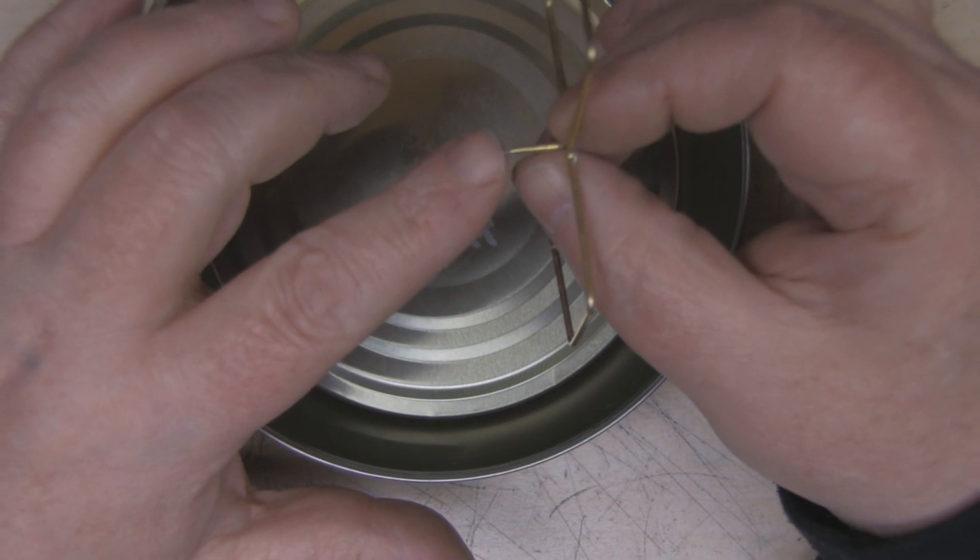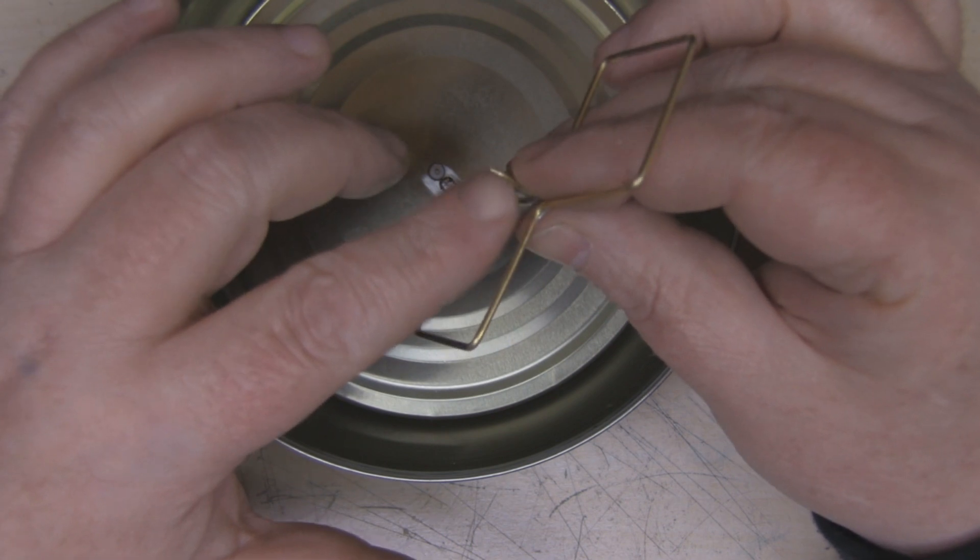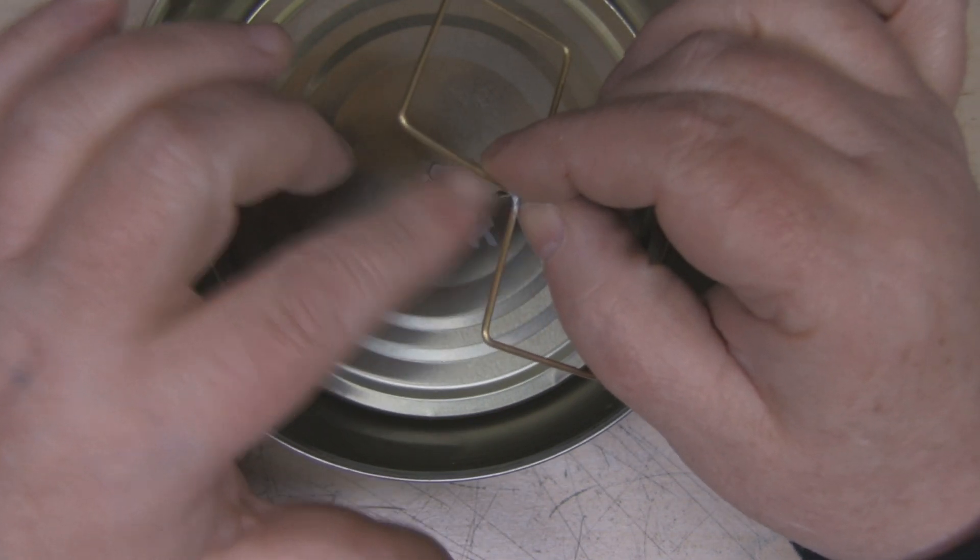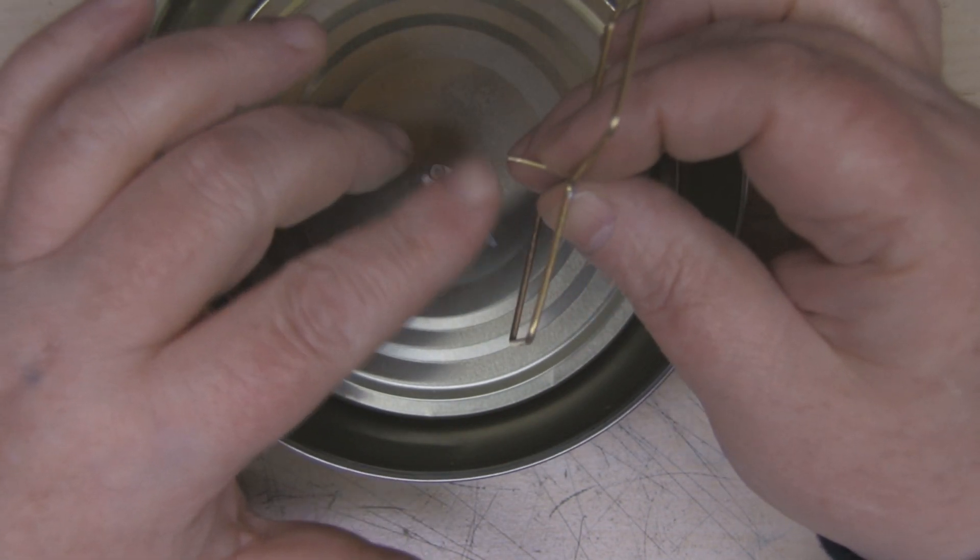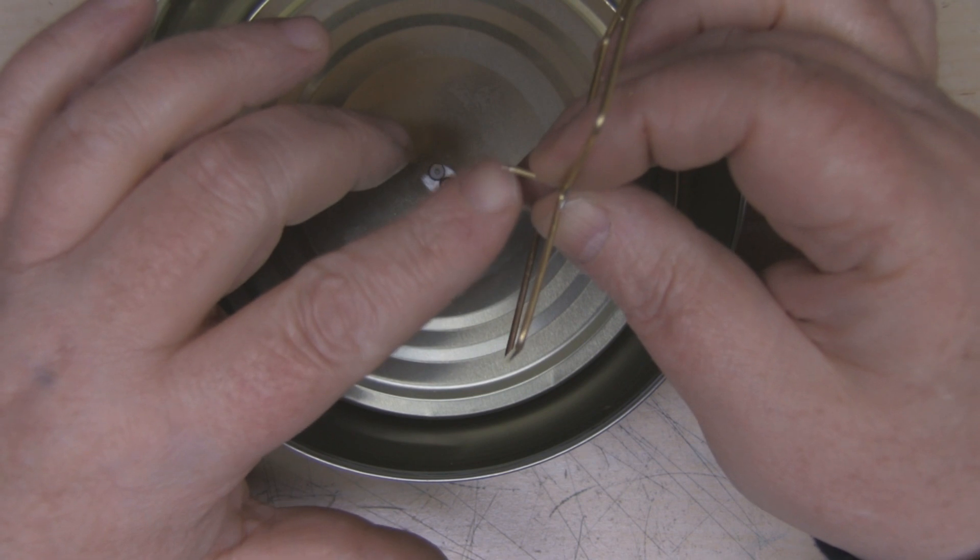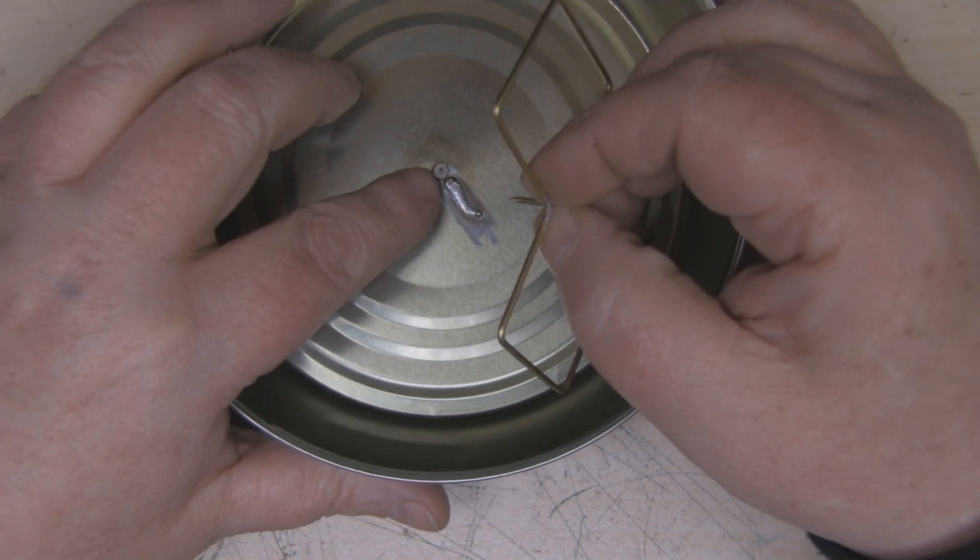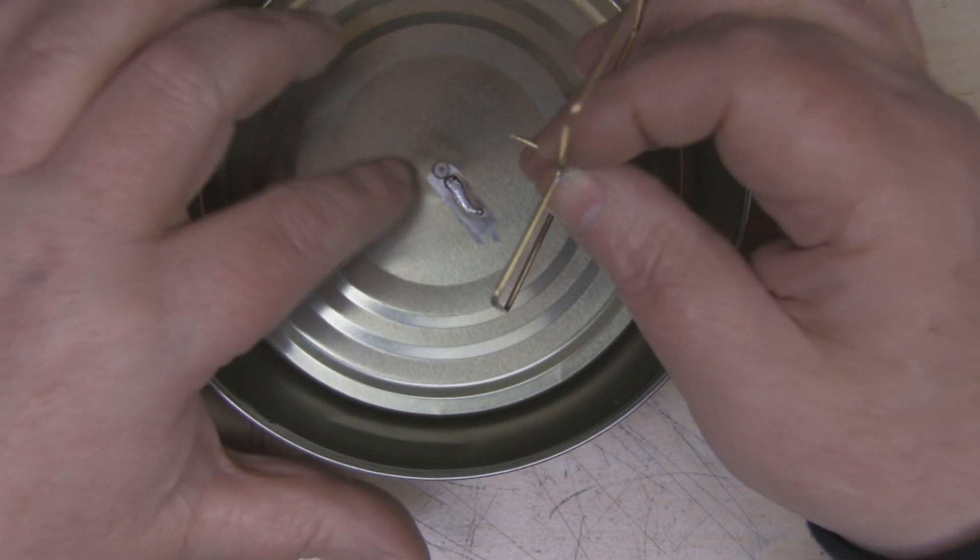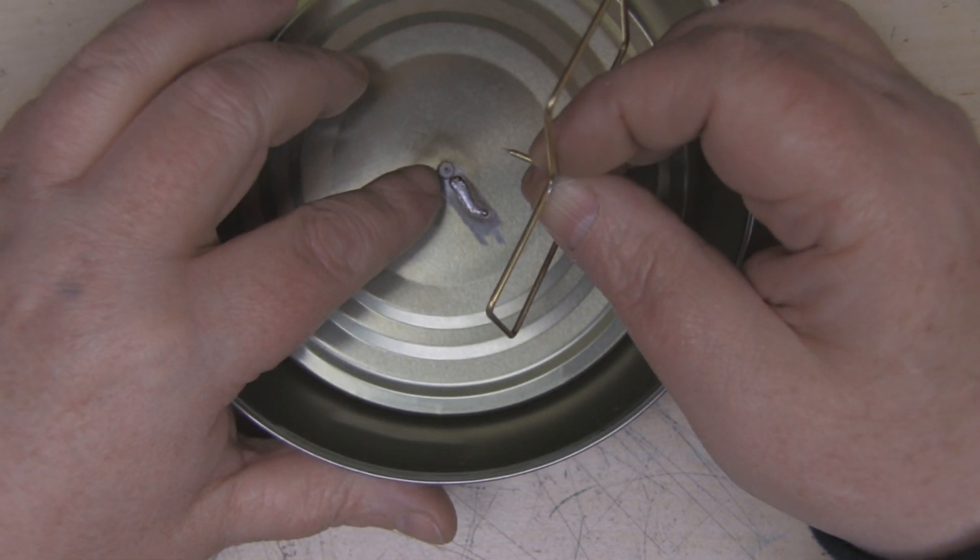Next I'm going to solder the biquad element onto the SMA connector. I've cut this leg down to 15 millimeters because we want the element to be away from the reflector by 15 millimeters. I've also sharpened the end of that leg up just so I can fit it into the SMA connector there because this gauge wire is a little bit too thick to fit in there.